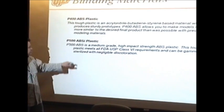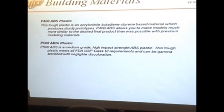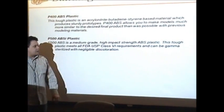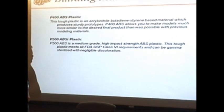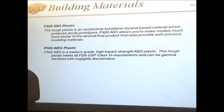And then you also have the ABSI plastic, which is the high-grade, high-impact strength. Stronger, and it's also, like I told you, it meets FDA USP class 6 requirements. And it can be gamma sterilized. So that's what's kind of cool about that plastic.